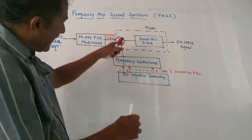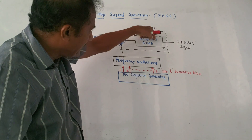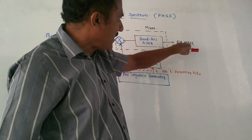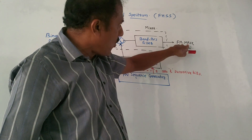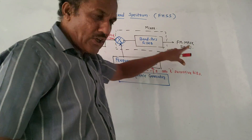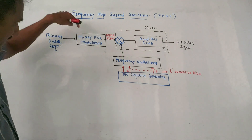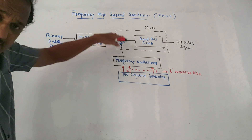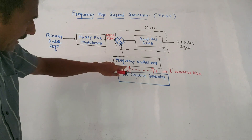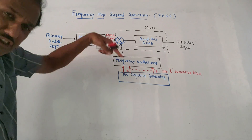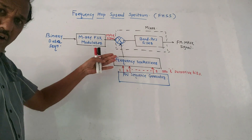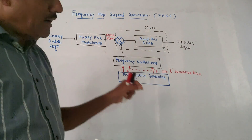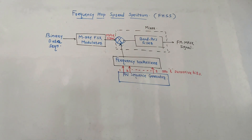The bandpass filter at the transmitter side is designed in such a way that it will only pass the sum frequencies. The output is called the FH-MFSK signal — that is, frequency hopped MFSK signal. So there are two levels of modulation: first is MFSK modulation, and second is the modulation in which the PN sequence directs the frequency synthesizer to generate a particular frequency hop.